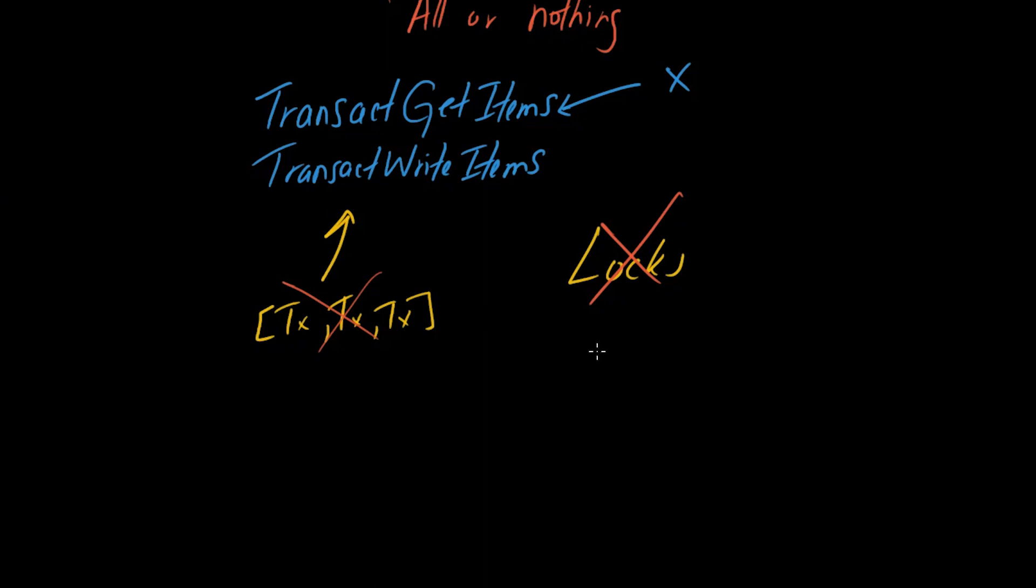Typically in other databases, sometimes you see them use locks, so they'll lock the rows that are being modified so that no one can read and no one can write. The transaction API for DynamoDB does not use this concept. It's taking the stance where it'll just fail the entire transaction as opposed to locking the rows so that others cannot read it.